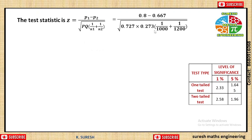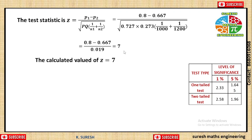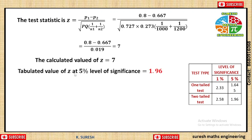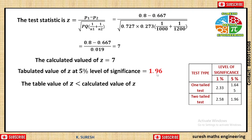Applying the formula, we get the calculated Z value. At 5 percent level of significance, comparing the calculated Z value with the table value, we reject the null hypothesis H0.